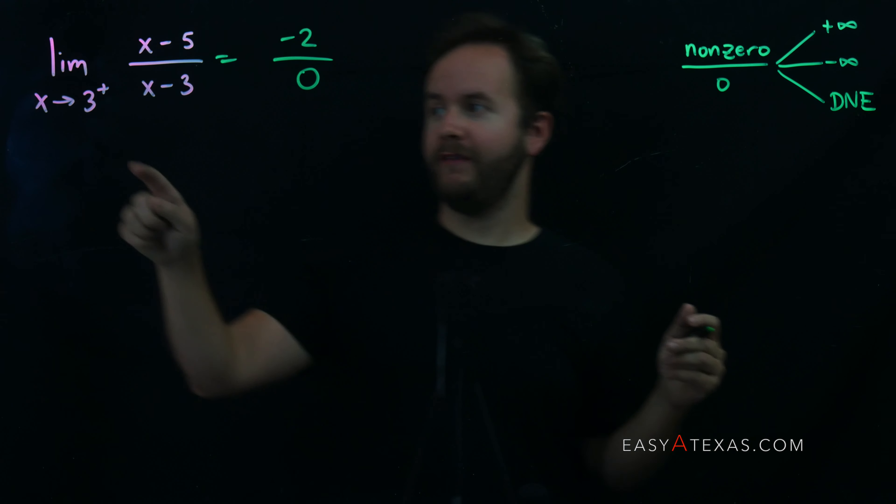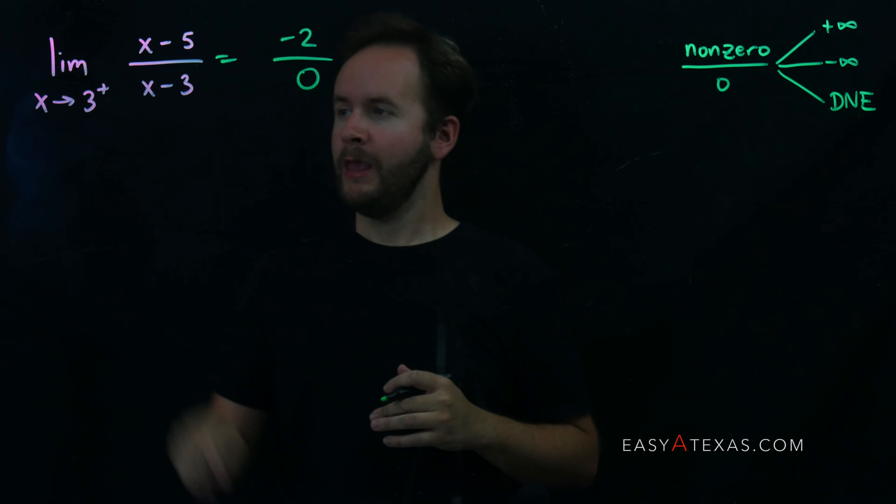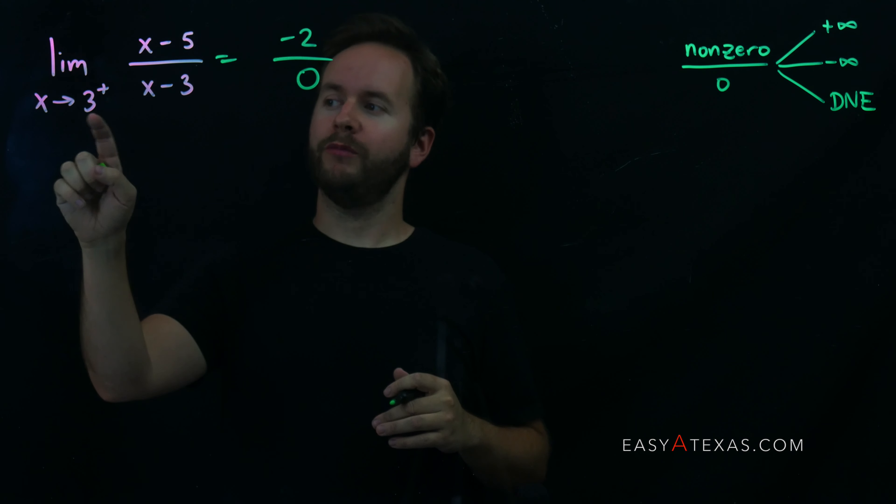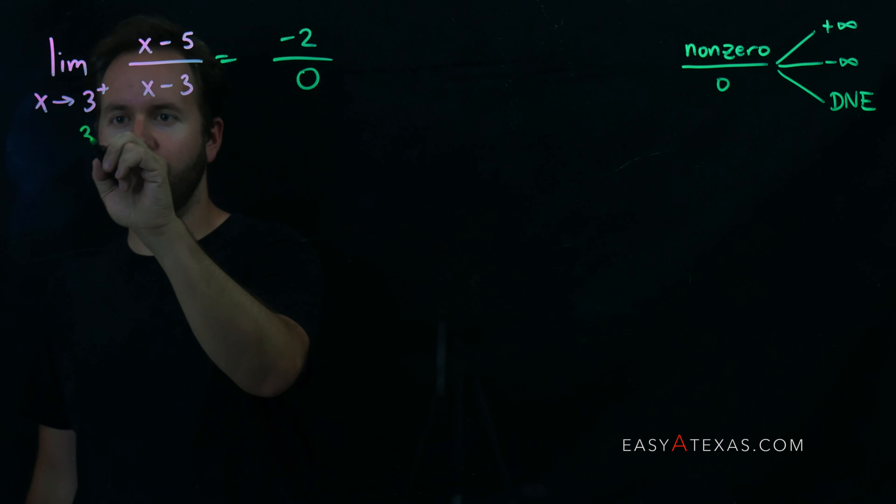We're going to do that based on picking values slightly larger or smaller than 3, depending on what side we're coming from. In this case, we're being told that we're approaching 3 from the right, so we're talking something like 3.1.